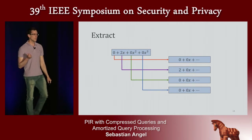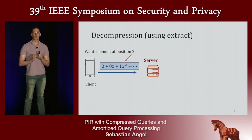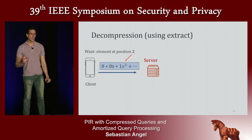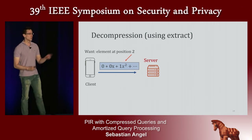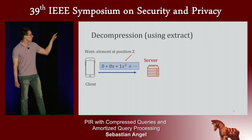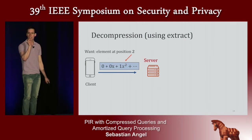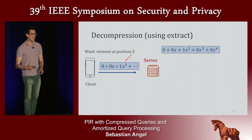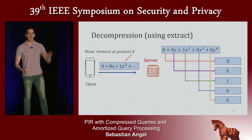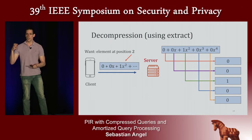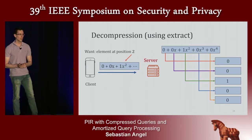We can use this extract procedure to build compression and decompression as follows. In XPIR, the client generates many different encryptions of 0 and an encryption of 1. Instead, we encode the query vector in the coefficients of a single polynomial. Because the client is interested in position 2, we set the coefficient of x squared to 1 and everything else to 0. This is a single ciphertext, which the client sends to the server. The server receives the ciphertext and calls extract on it. By extracting all of the coefficients, the server reconstructs the query vector the client would have generated, and then proceeds with the rest of the PIR protocol.